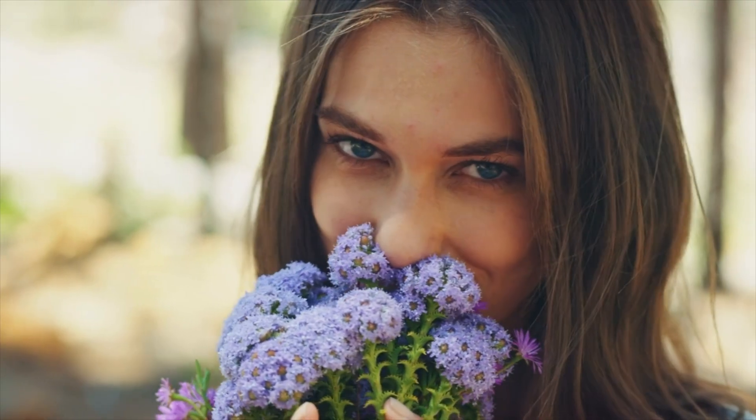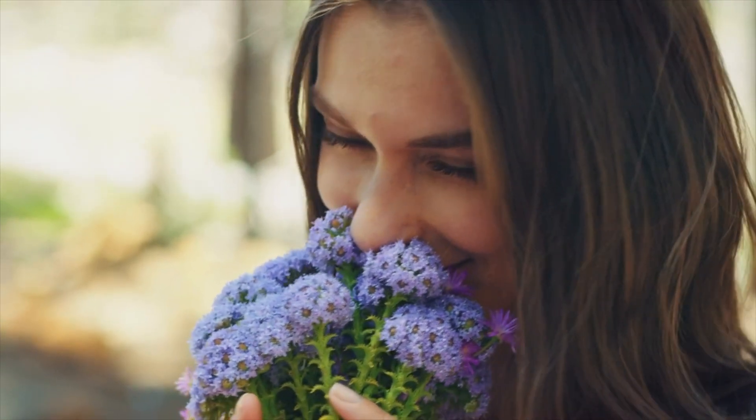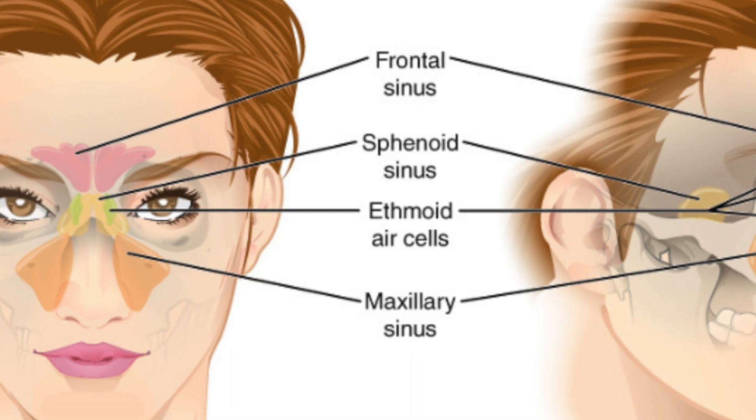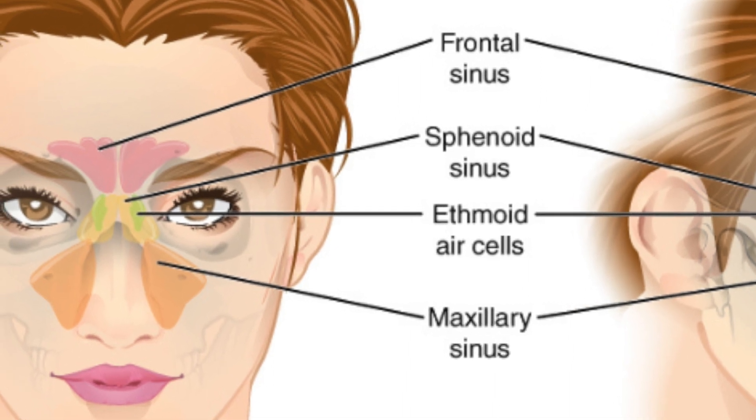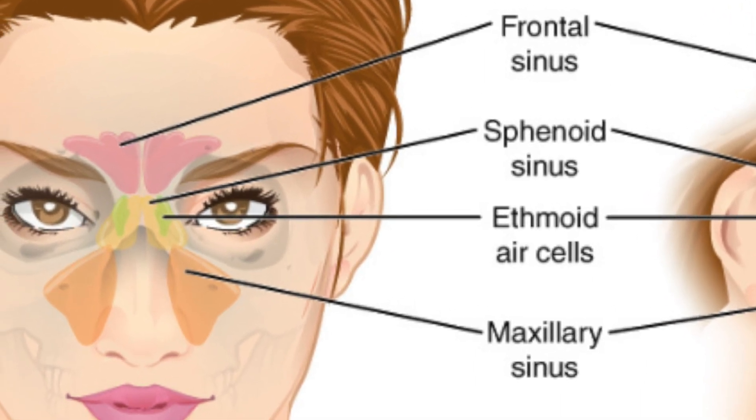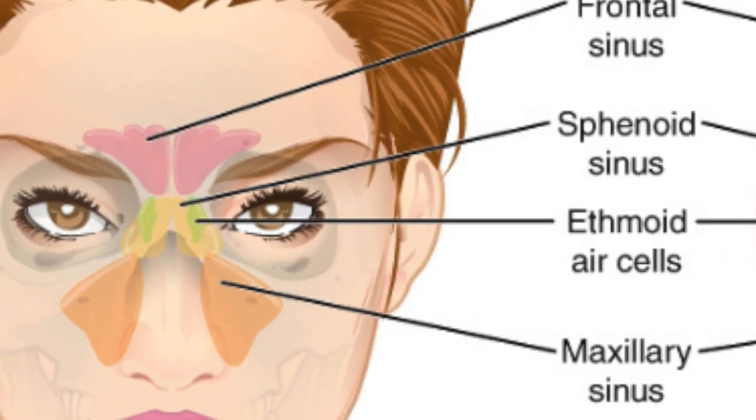Clinical features of bacterial rhinosinusitis include facial pain or pressure as the main symptom, nasal blockage, nasal discharge that is thick, colored, and opaque, hyposmia (decreased sense of smell), anosmia (inability to smell anything), cough, fever, headache, fullness or pressure, dental pain, and halitosis (bad breath).